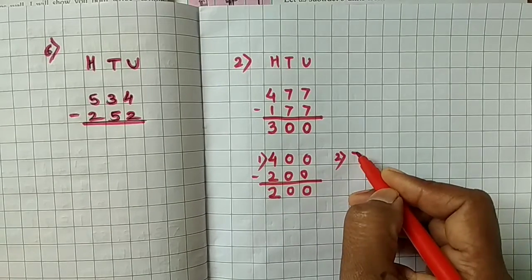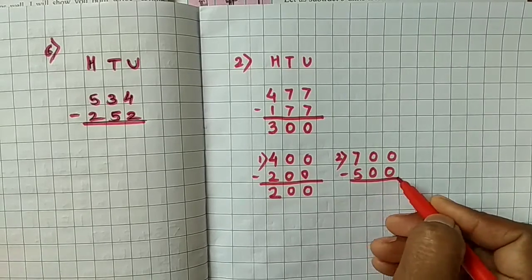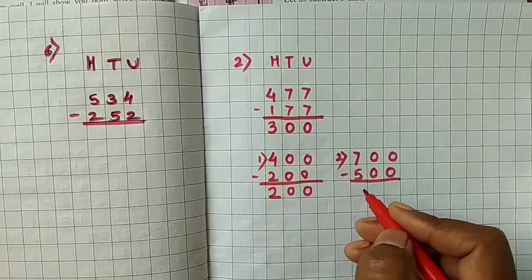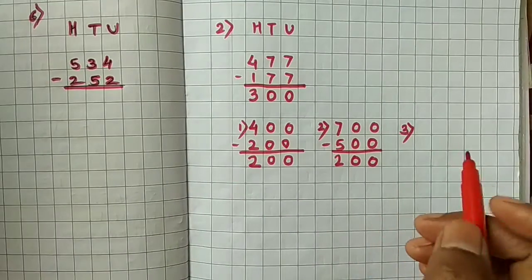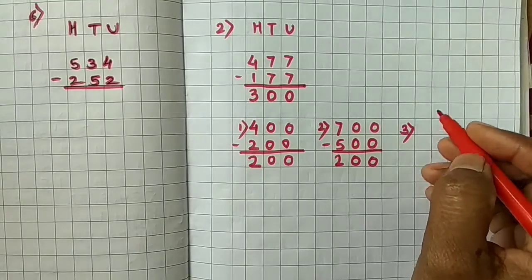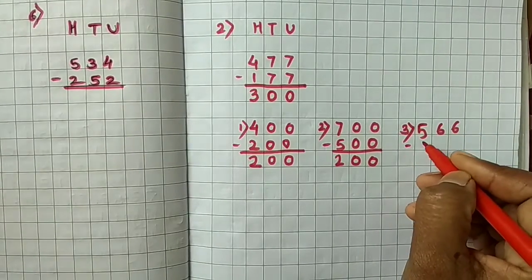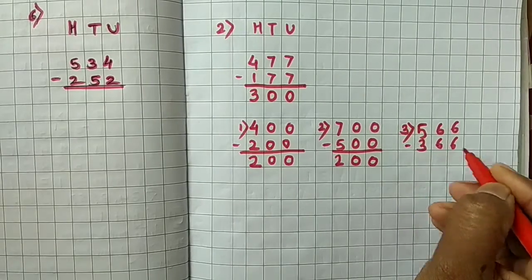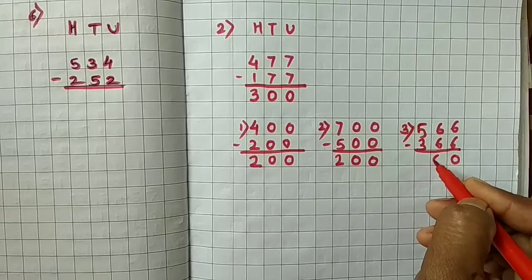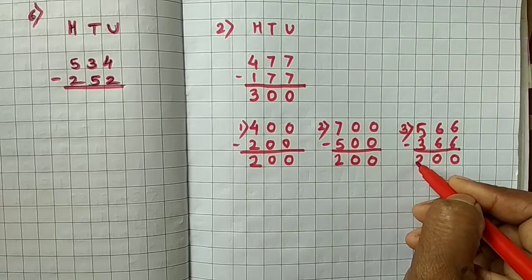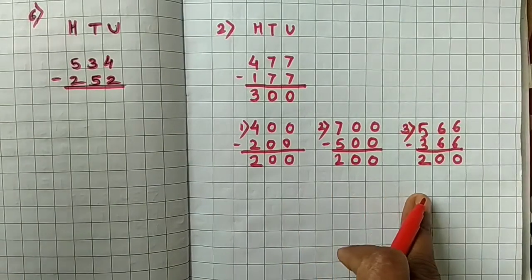Next, 700 minus 500. Yes, this example's answer is also 200. And take another example. Now 566 minus 366. We get as 6 minus 6, 0. 6 minus 6, 0, and 5 minus 3, yes, 2. So these are the 3 subtraction examples.